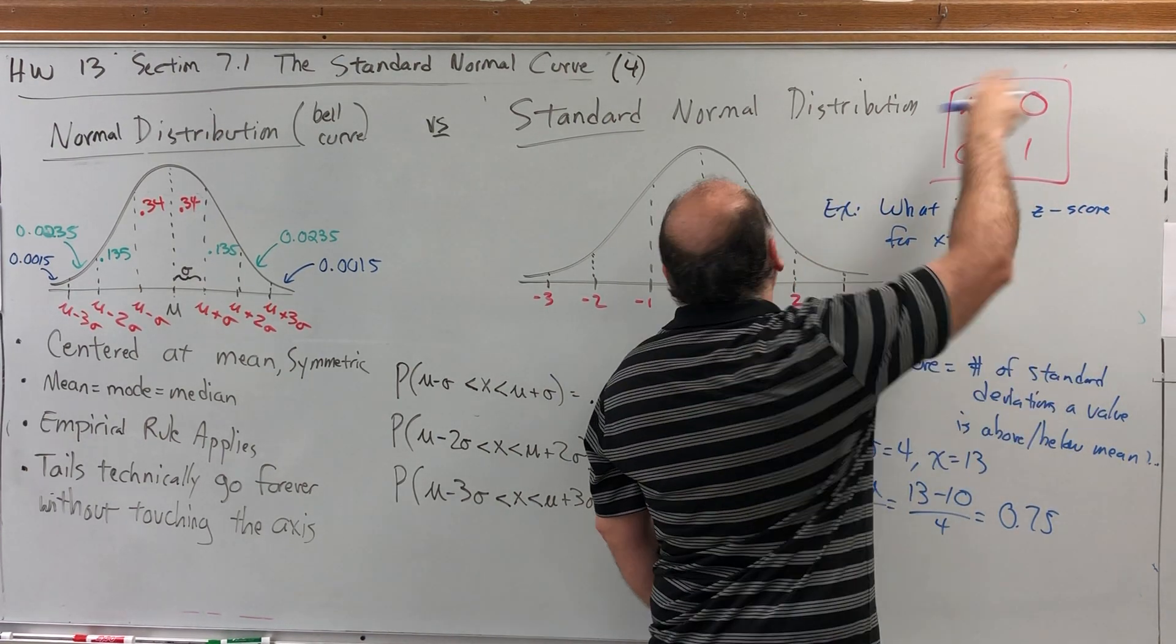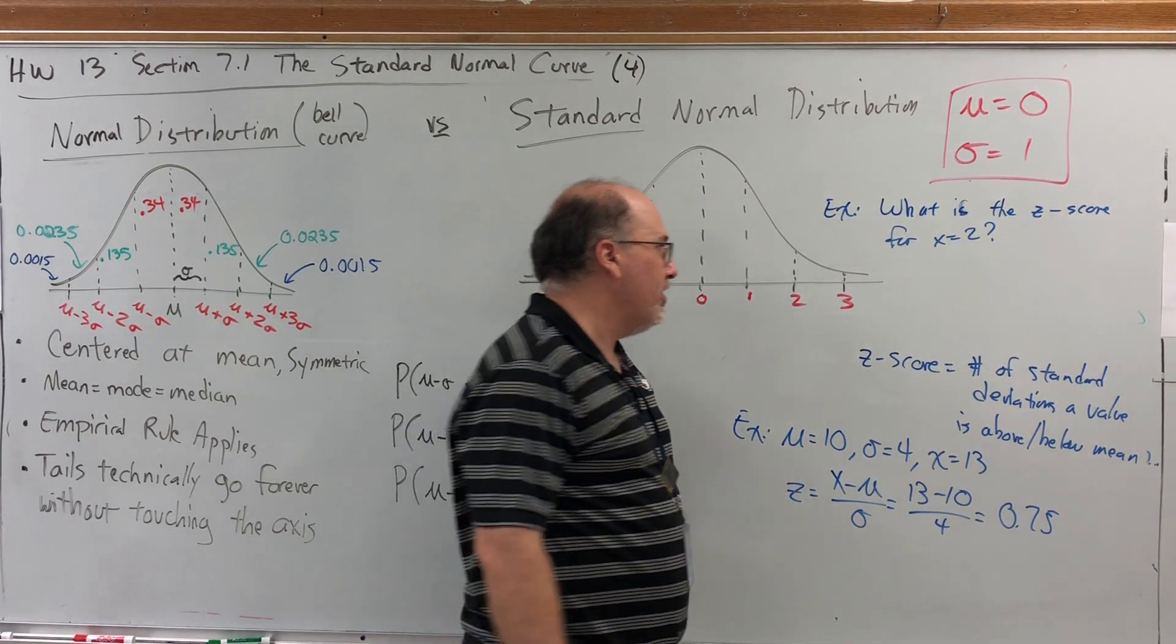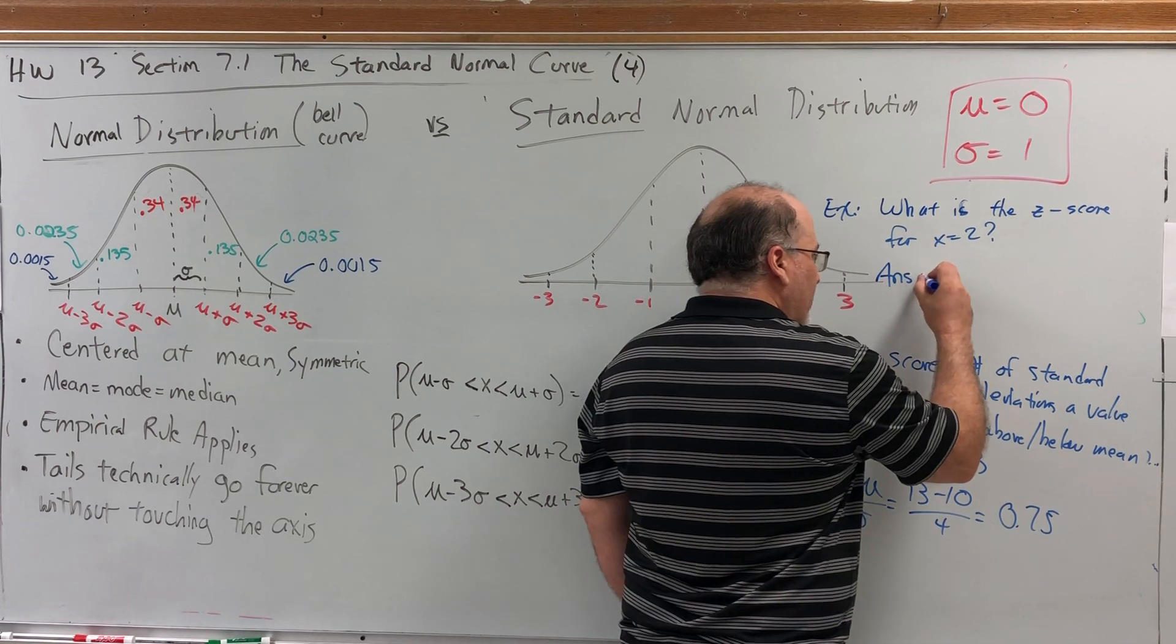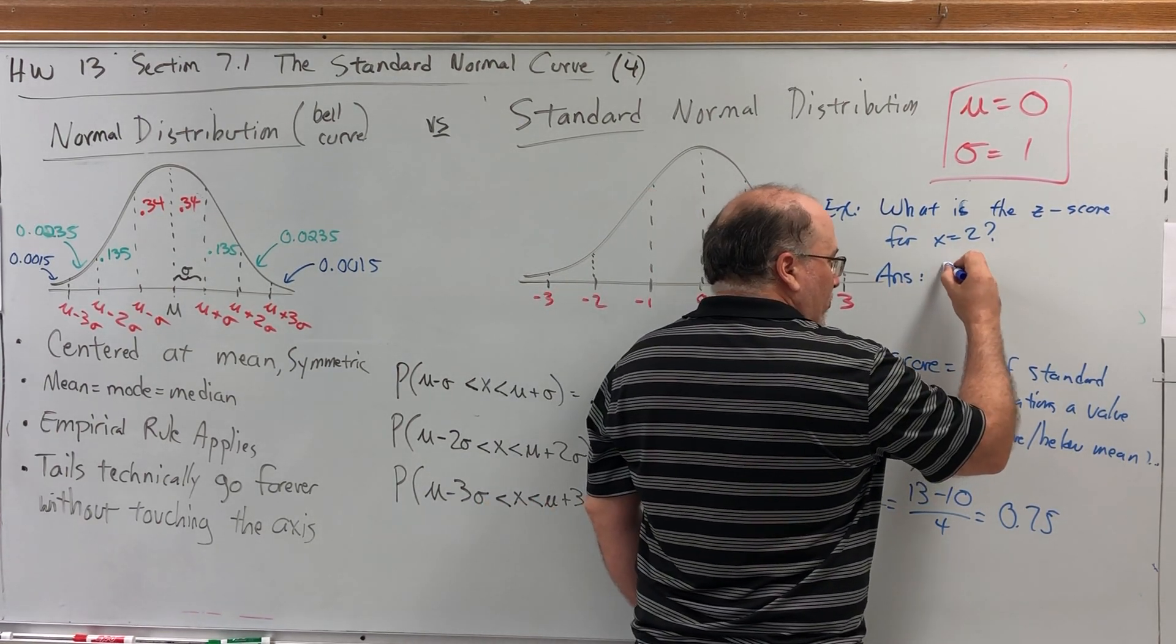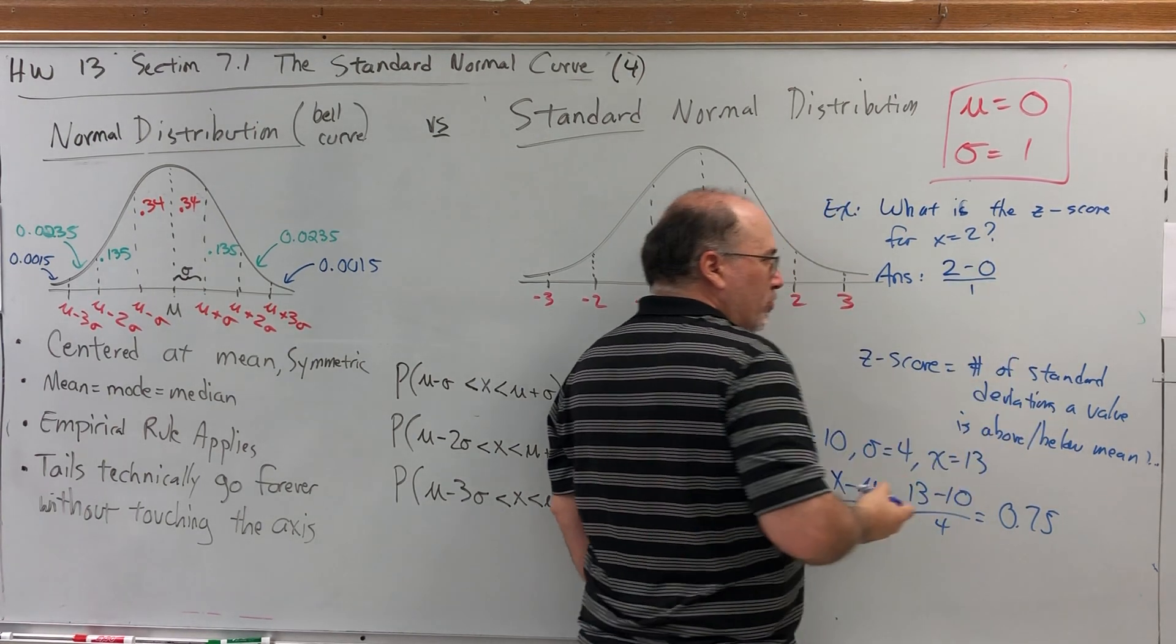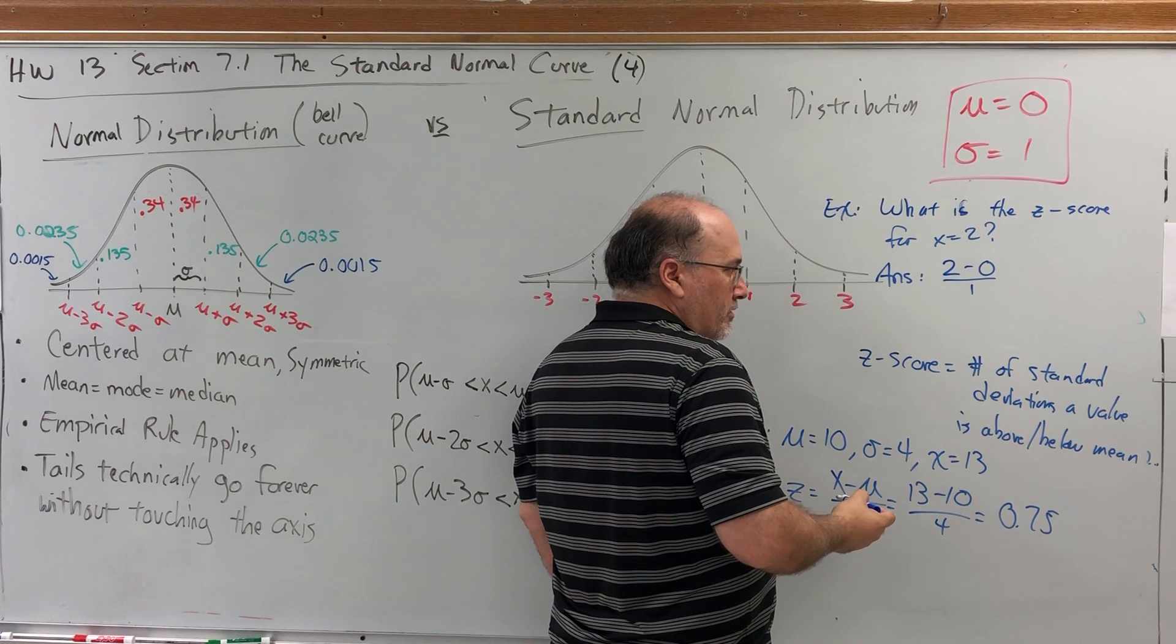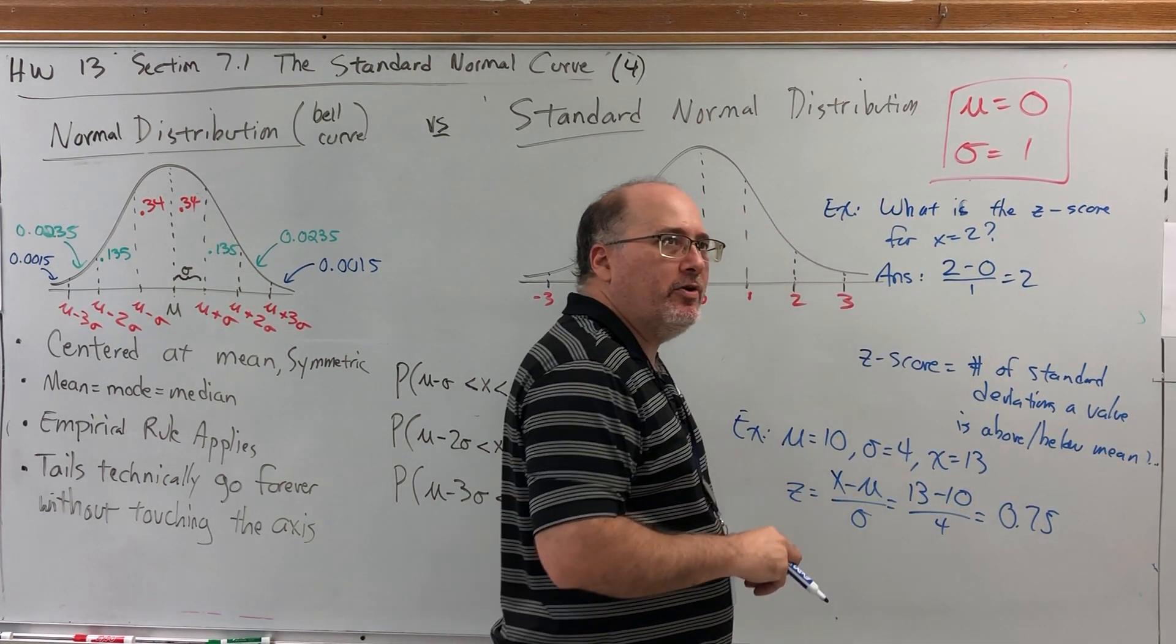And again, we're looking under a standard normal distribution whose mean is 0 and whose standard deviation is 1. Well, if we follow the same formula as before, it's the x, which is 2, minus the mean, which is 0, divided by the standard deviation, which is 1. That's just equal to 2, which was the value that we started with.